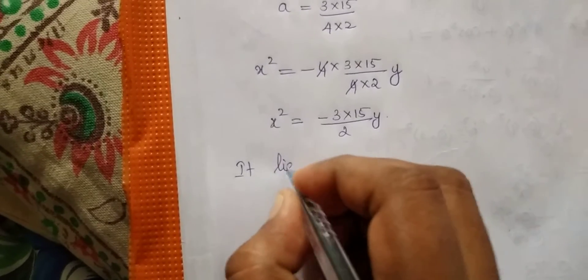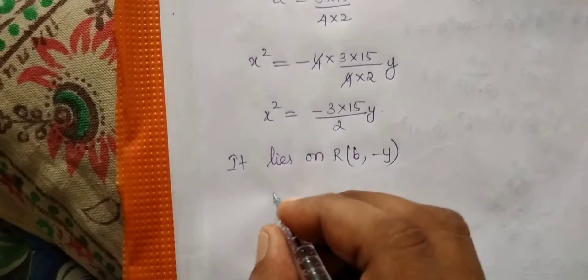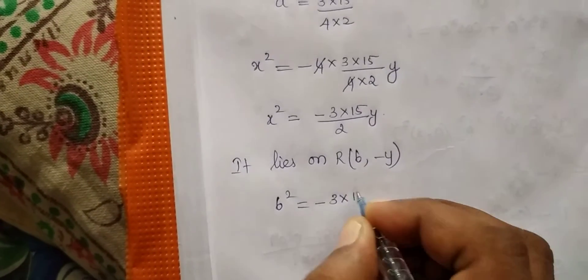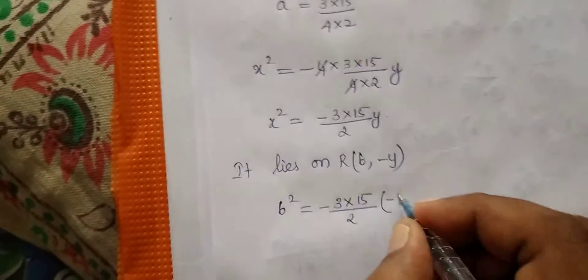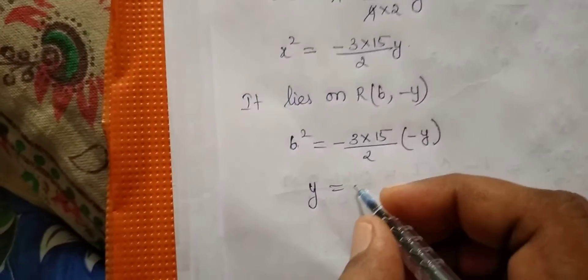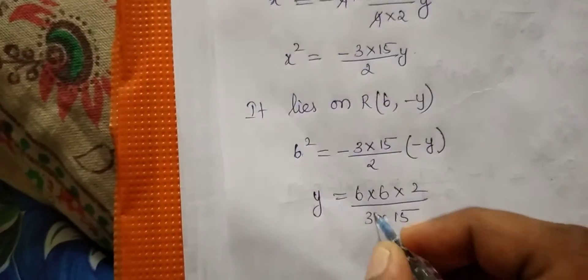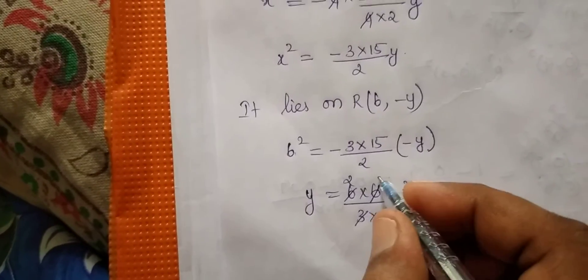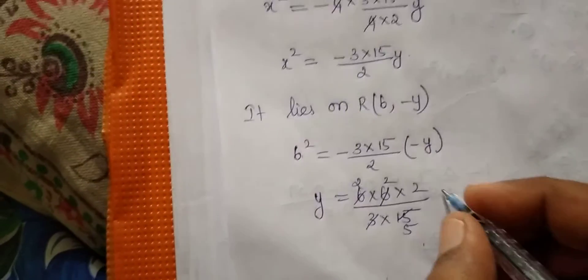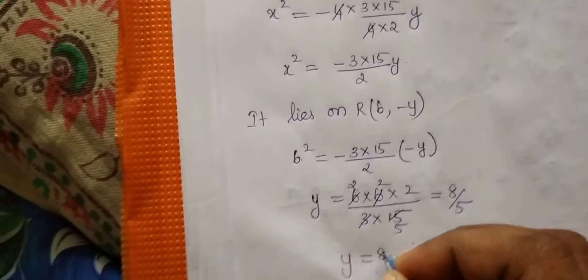Now we have an unknown point on the arch. It lies on the parabola at point R, with coordinates (6, −y). Substituting: 6² = −(3 × 15)/2 × (−y). Minus times minus gives plus, so y = (6 × 6 × 2) / (3 × 15). Simplifying, y = 8/5.